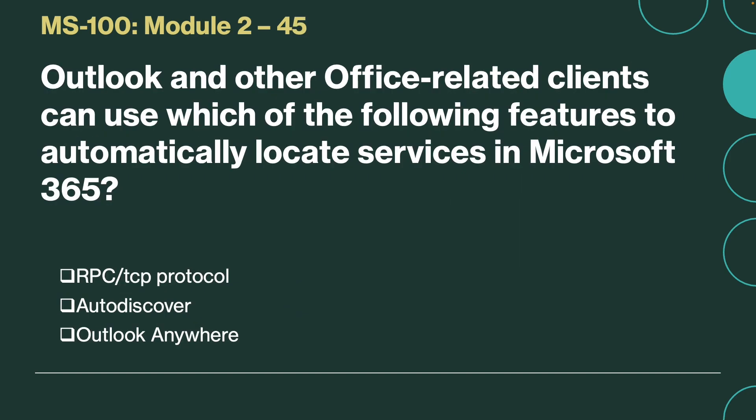Next question. Outlook and other Office-related clients can use which of the following features to automatically locate services in Microsoft 365? The correct answer is auto-discover. Microsoft Outlook automatically locates services in Microsoft 365 by using auto-discover. For example, auto-discover automatically configures Outlook to connect to Exchange Online without the need to manually configure user connection settings.